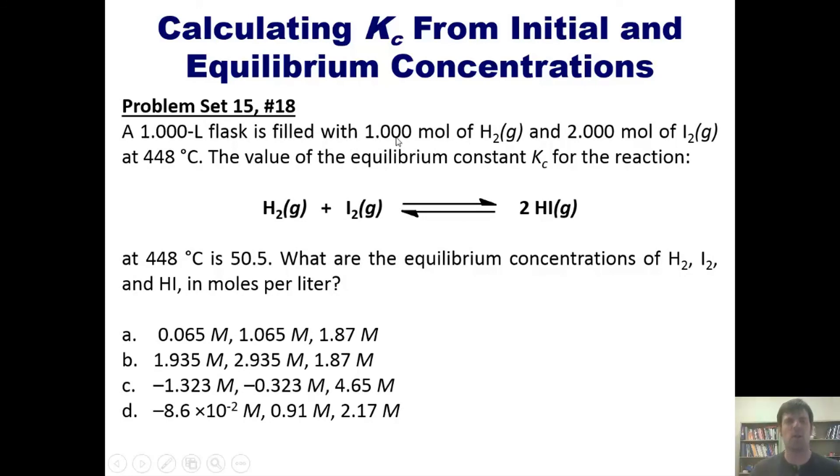And now I'll conclude with this example. A one liter flask is filled with one mole of H2 and two moles of I2 at 448°C. The value of the equilibrium constant expression Kc for this reaction is that number. What are the equilibrium concentrations of H2, I2, and HI in moles per liter? Now this is an interesting one because in this problem, we actually have the value of Kc. We also have the initial concentrations of H2 and I2. What we lack are the equilibrium concentrations of H2, I2, and HI, and that is what we're asked to do. Now I'm not going to solve this problem for you at all, even on the board. I will make you do it on your own.